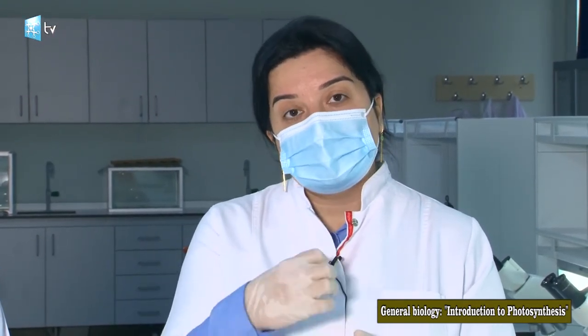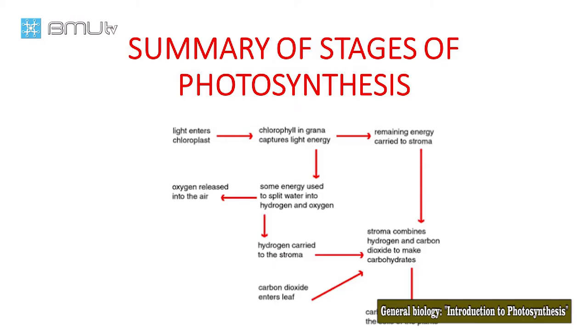In the second stage, photophosphorylation, ADP combines with phosphate groups and by this way forms ATP molecules. ATP molecules and oxygen are the main products of this stage of photosynthesis.